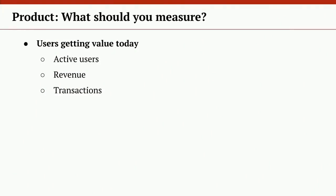You might say you want to focus on active users — people are going to be active if they're getting value. You might want to focus on revenue; that's a sign that people are getting value. In the case of a marketplace, where you have things like buyers and sellers, that's usually a case where it makes sense to measure transactions.